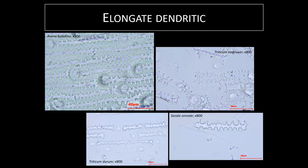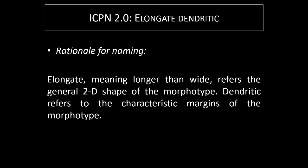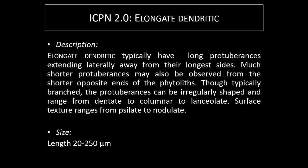To illustrate this, I will go back to one morphotype we described: the elongate dendritic. Passing through all the subheadings — the rationale for naming: elongate refers to the general 2D shape, and dendritic points out the quite major characteristics of the margin. The description indicates that dendritic morphotypes typically have long protuberances extending laterally away from their longest sides; much shorter protuberances can also be observed from the shorter opposite ends. The protuberances can be irregularly shaped, ranging from dentate to columnar to lanceolate. Surface texture ranges from smooth to nodulate, and length ranges from 20 to 250 microns.